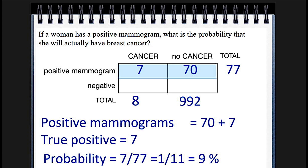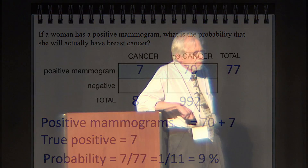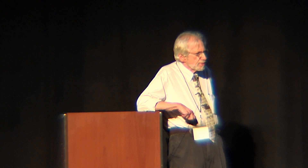We can immediately see what we want to know — who's in the box that has both a positive mammogram and cancer. And this incidentally uses roughly real numbers. So I don't think any oncologist would take any action based on the mammogram by itself without getting other data, family history, and so on.